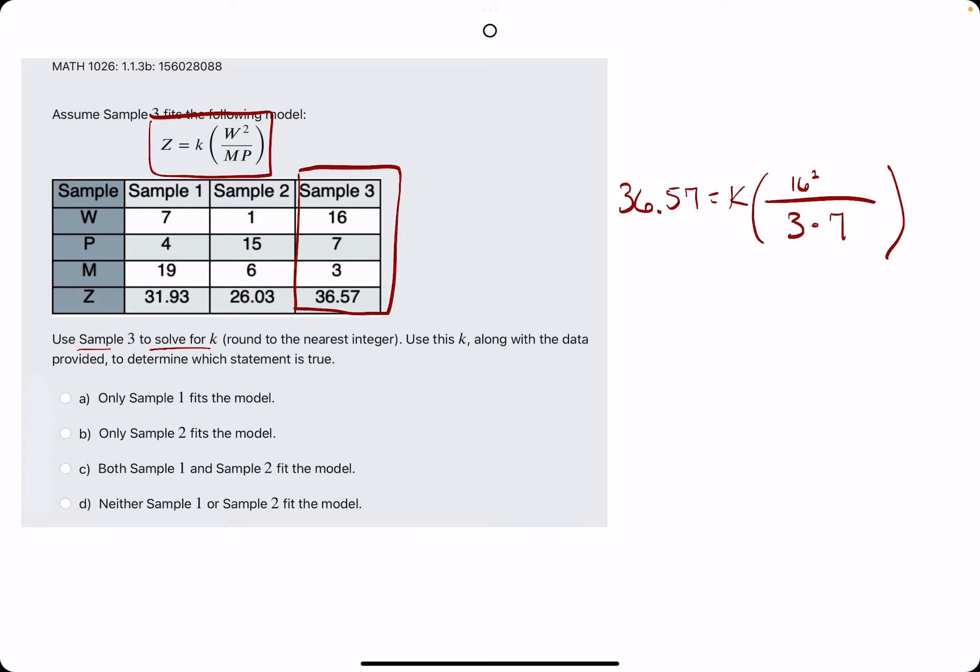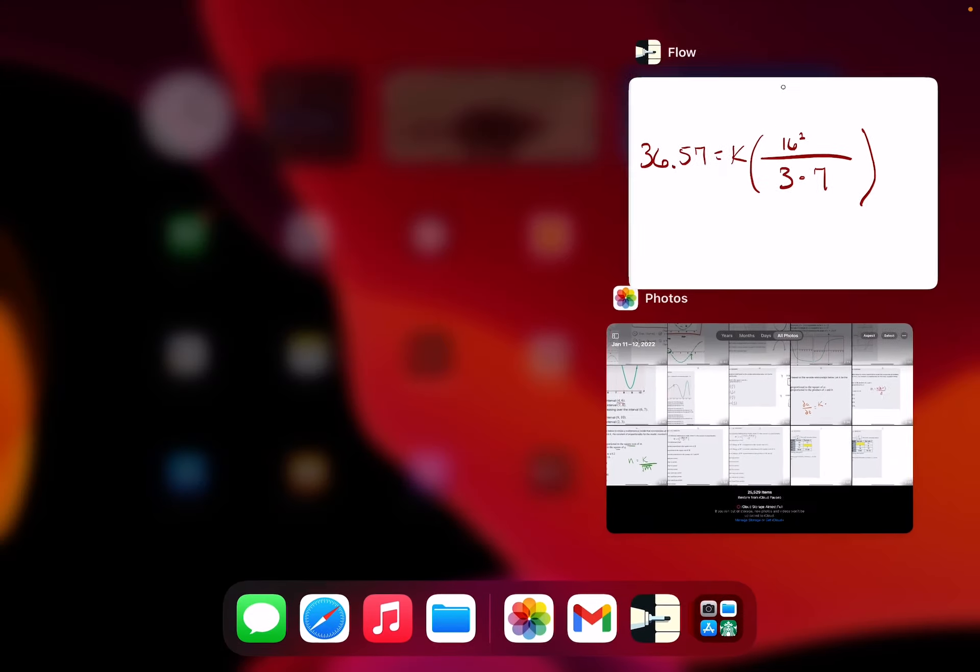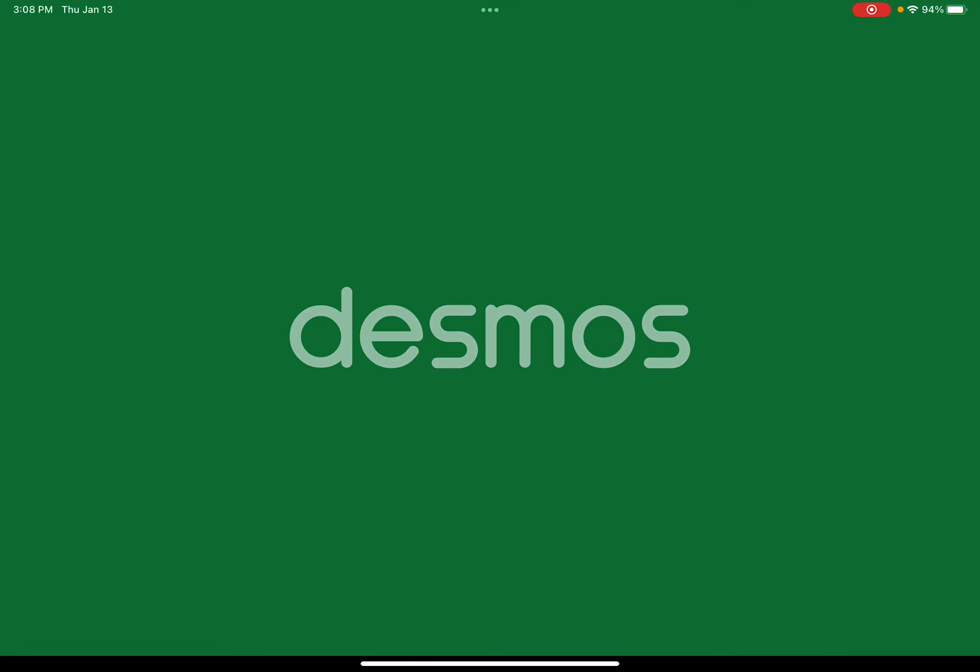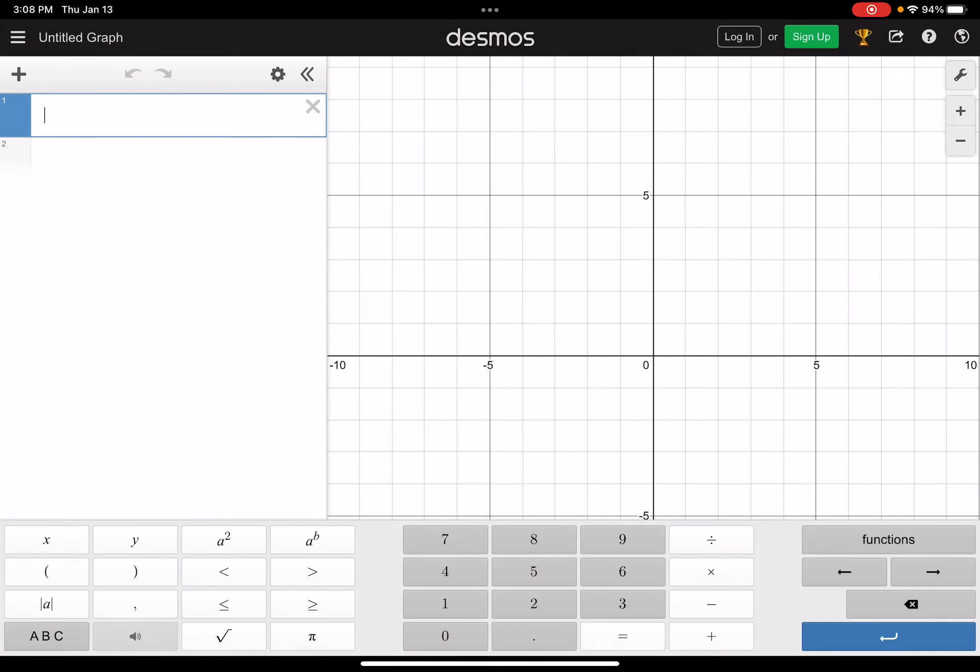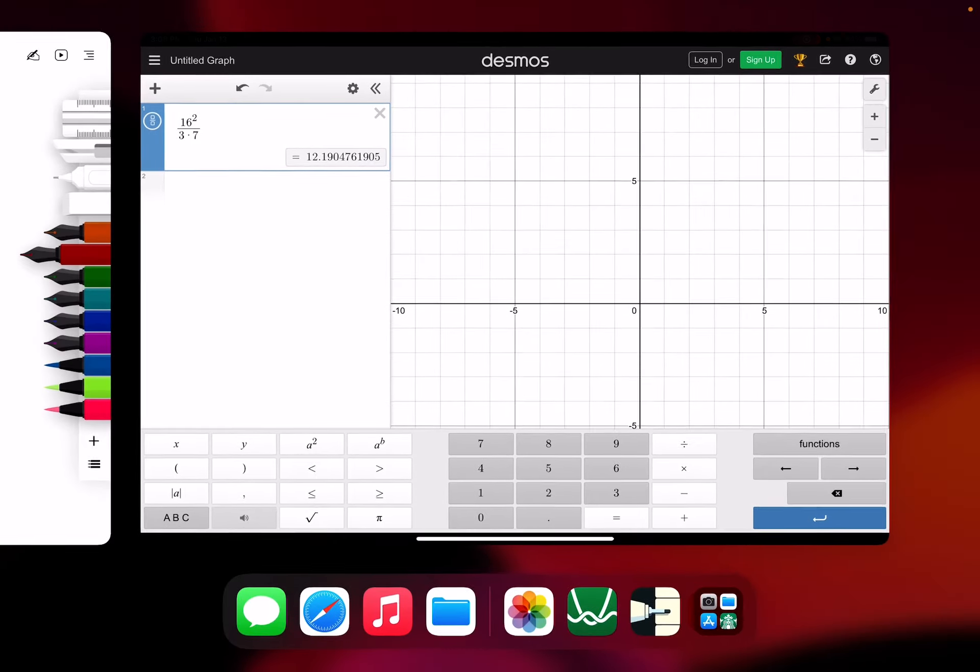Alright, so I would recommend going ahead and calculating this expression in the parentheses. Let's find some Desmos and get to work here. So here we have 16 squared divided by 3 times 7. So we get about 12.19.